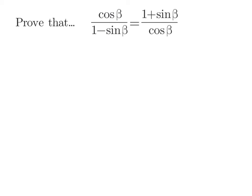We want to verify that cosine beta over 1 minus sine beta is equal to 1 plus sine beta over cosine beta. Our plan is to start with the ugly side and turn it into the pretty side, but these two fractions look equally as beautiful. You may be tempted to treat this as an equation and cross-multiply, but we're verifying an identity and can't work both sides at the same time. Since they're about the same, I'm just going to take the first one: cosine beta over 1 minus sine beta.